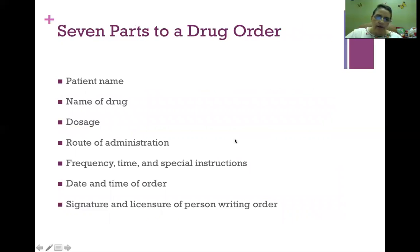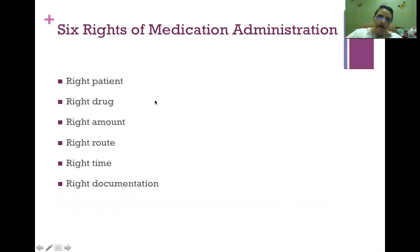Let's talk about the seven parts to a drug order. You need the patient's name, the name of the drug, correct dosage, the route of administration. The order has to have the frequency, the time, and any special instructions. You need the date and time of the order and the signature and licensure of the person writing the order. We also have six rights of medication administration: we check for the right patient, the right drug, the right amount, the right route, the right time, and the right documentation before we give the drug.